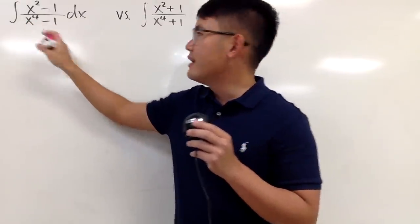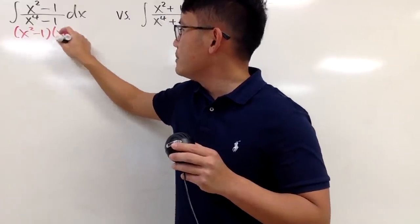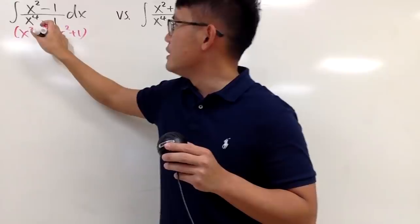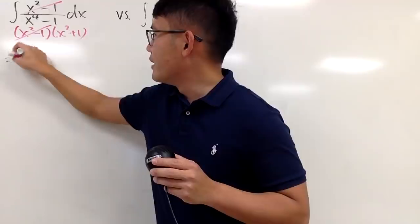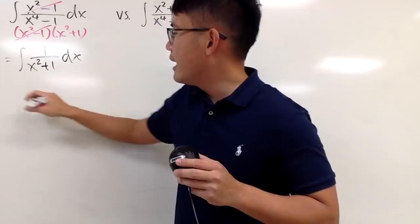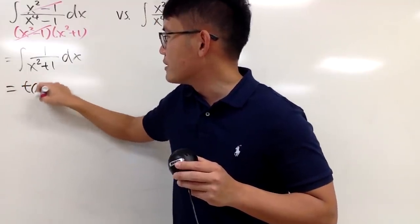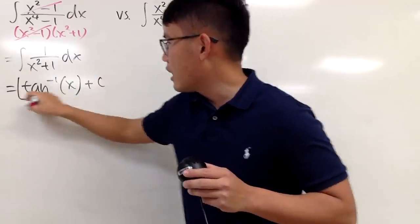This right here is the easier one because we can factor the denominator. When you factor it out, you get (x²-1)(x²+1). You see, they cancel out already. Therefore, we just have the integral of 1/(x²+1), and that's just the inverse tangent of x. We are done.